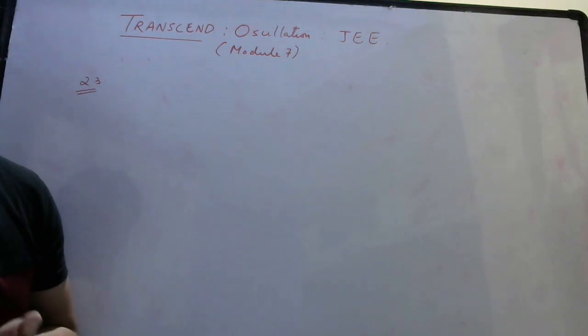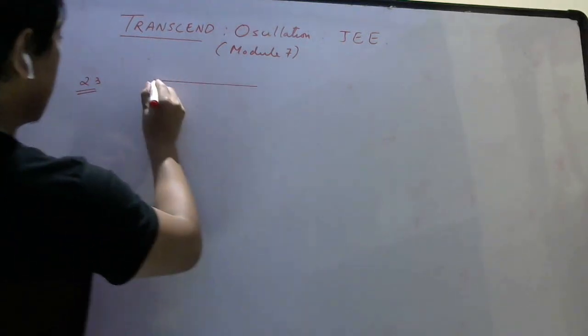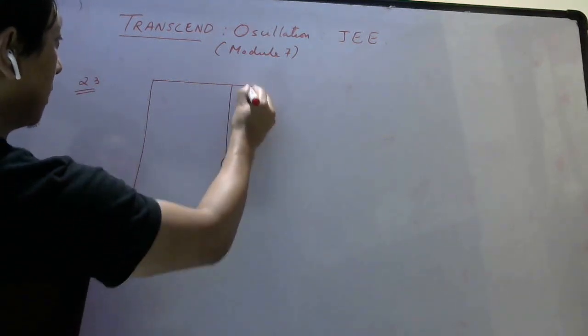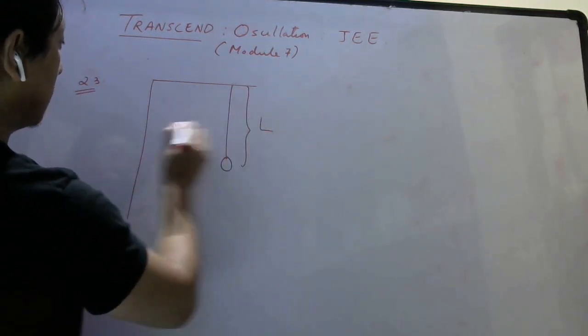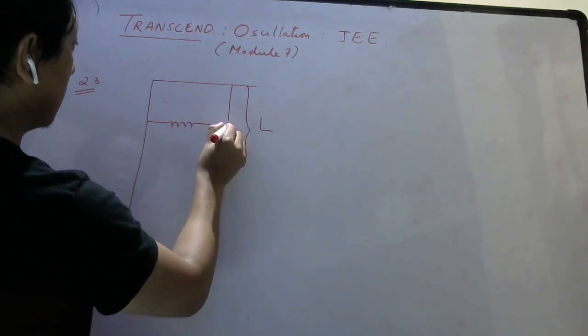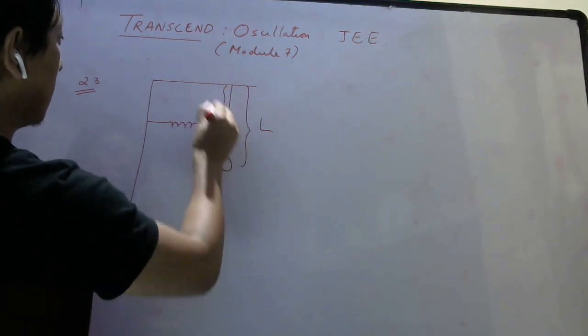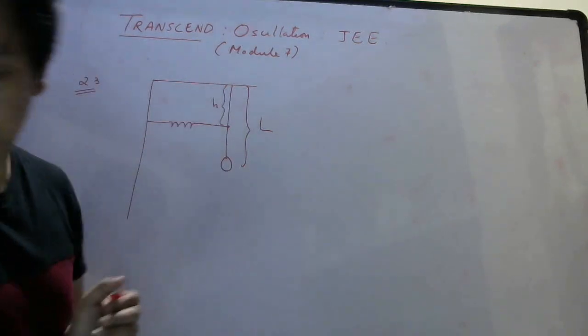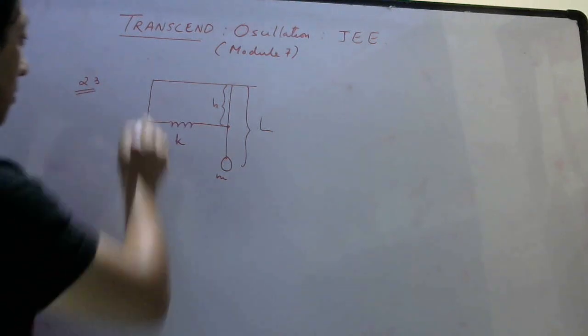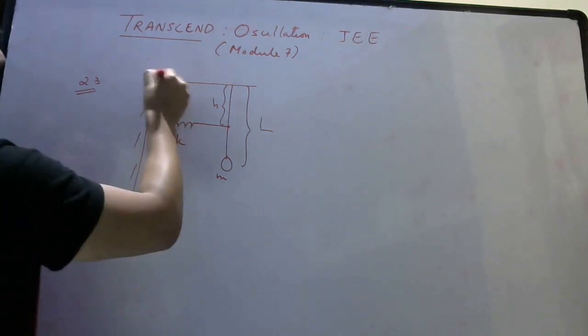It says a pendulum of mass M and length L is connected to a spring as shown in the figure. There is a pendulum like this, the length is L, and there is a spring connected to one end at height H. Mass of the pendulum is M, spring constant is K. This is a fixed wall as you can see.